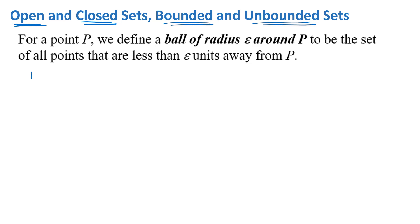Let's think about this definition in different dimensions. In R1, we're thinking about a number line, so our point P would be a specific value — like seven, negative six, 253.7, or pi. A ball of radius epsilon around P would be all the points less than epsilon units away, which means going left or right on the number line — that gives us the interval from P minus epsilon to P plus epsilon.